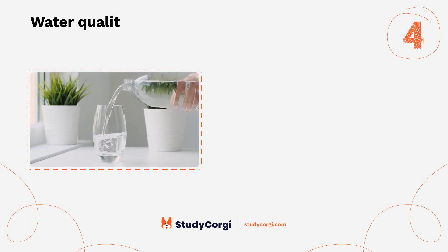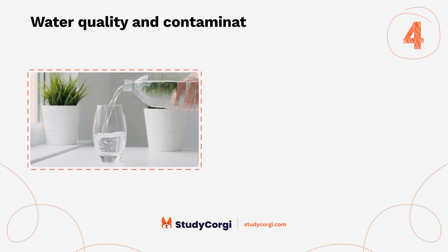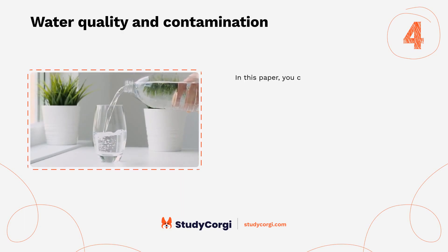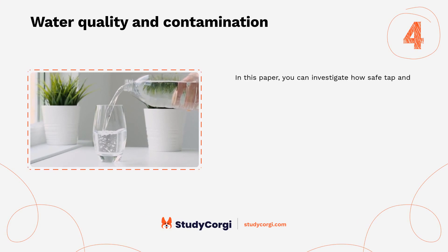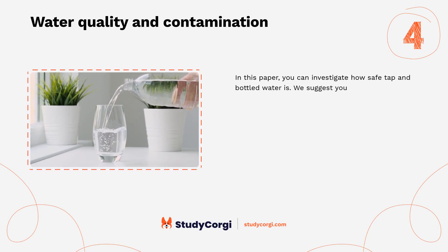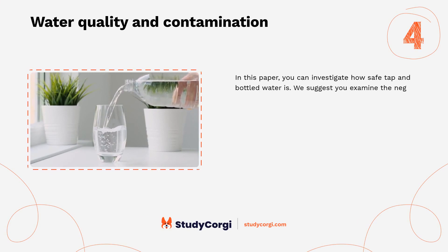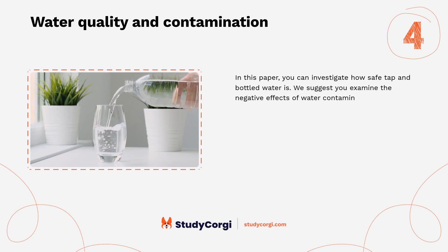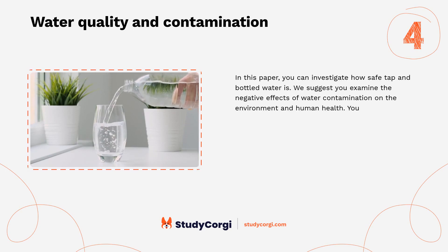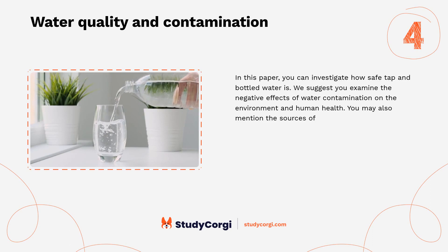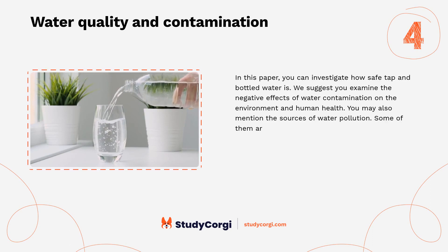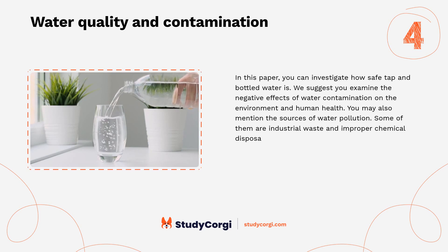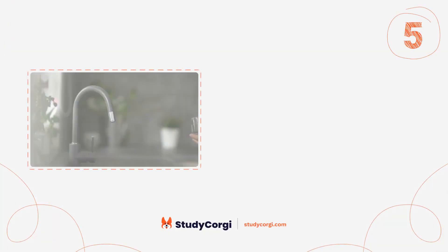Water quality and contamination. In this paper you can investigate how safe tap and bottled water is. We suggest you examine the negative effects of water contamination on the environment and human health. You may also mention the sources of water pollution, some of them being industrial waste and improper chemical disposal.